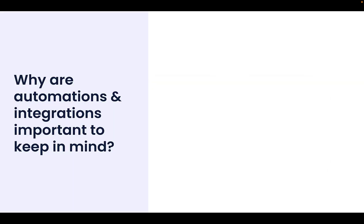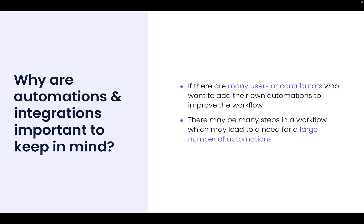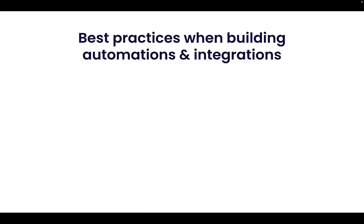So why are automations and integrations something we should keep in mind when building for scale? We already know we might have a lot of users interacting with the workflow, a lot of contributors, and they might want to add their own automations to improve the workflow's efficiency. Given that we might also have a lot of steps in our large workflow which might need automating, we might find that we are adding a huge number of automations to each board. We might also be working with a lot of different tools and plan to integrate between them.